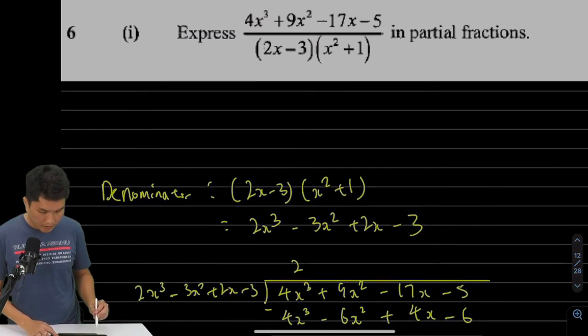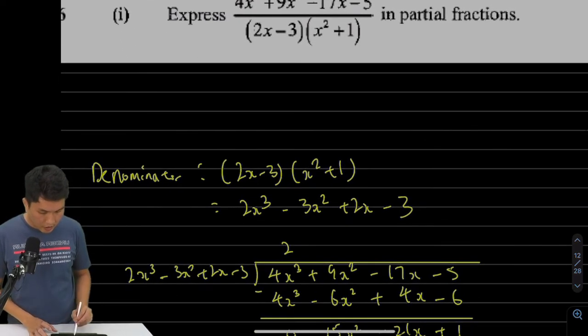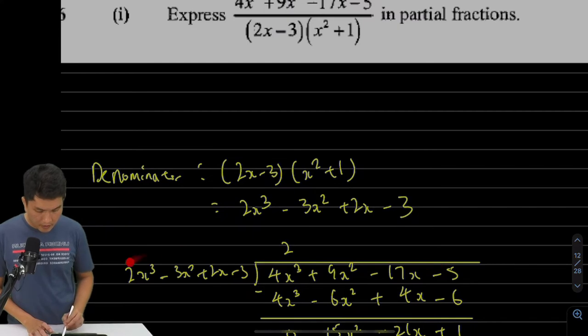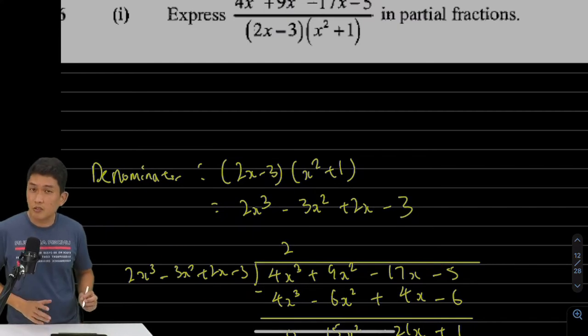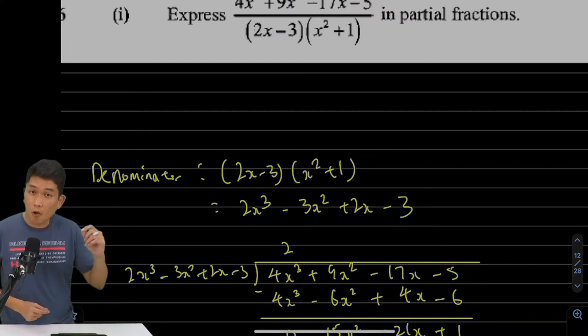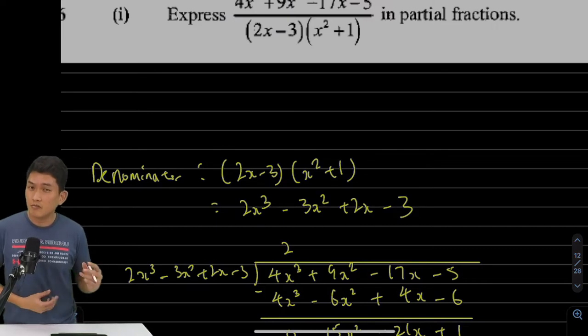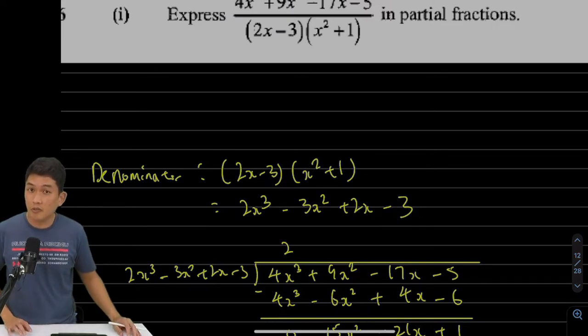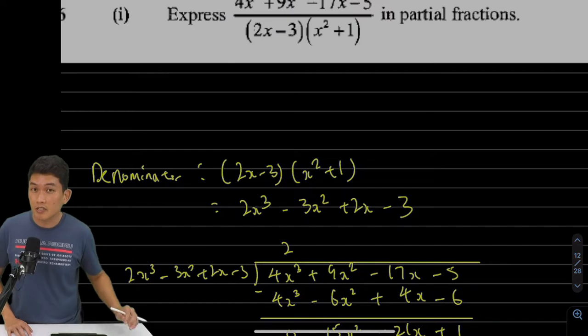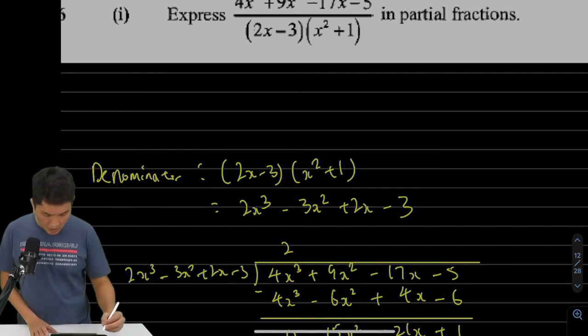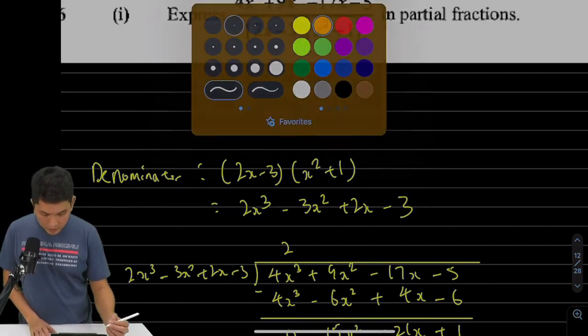Next, to do long division, we are going to take the numerator divided by the denominator. So this is also where some students might make mistake of copying wrongly. Make sure you just do a double check and see if you have copied down all the terms correctly, including the signs.